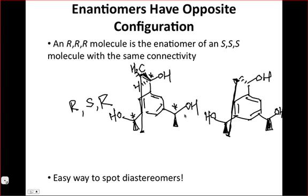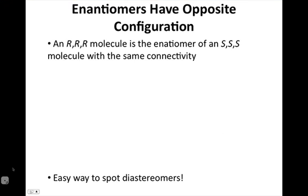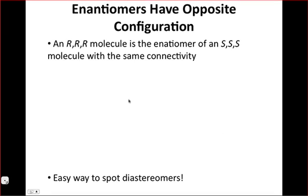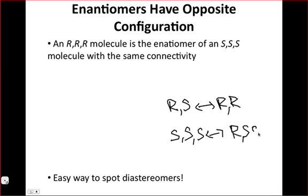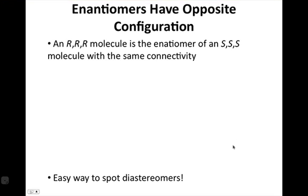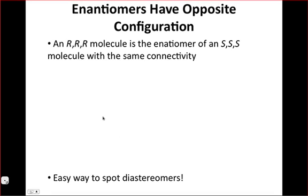So the take-home message there is that diastereomers have different but not completely opposite configurations. For instance, more examples of diastereomers just in terms of RS labeling would be RS is a diastereomer of RR, SSS is a diastereomer of RSS, and the various combinations thereof. And you can think of countless examples of this sort of bringing things full circle and going back to the very first example. Those two molecules were diastereomers of each other, the two diols.